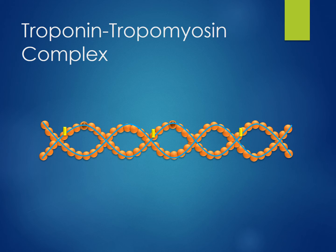When calcium ions are present to initiate muscle contraction, they will come in and bind to troponin. Troponin will then move tropomyosin out of the way of the active sites. After this, contraction can occur through myosin heads binding to the active sites and pivoting to pull actin filaments inward toward the M-line.